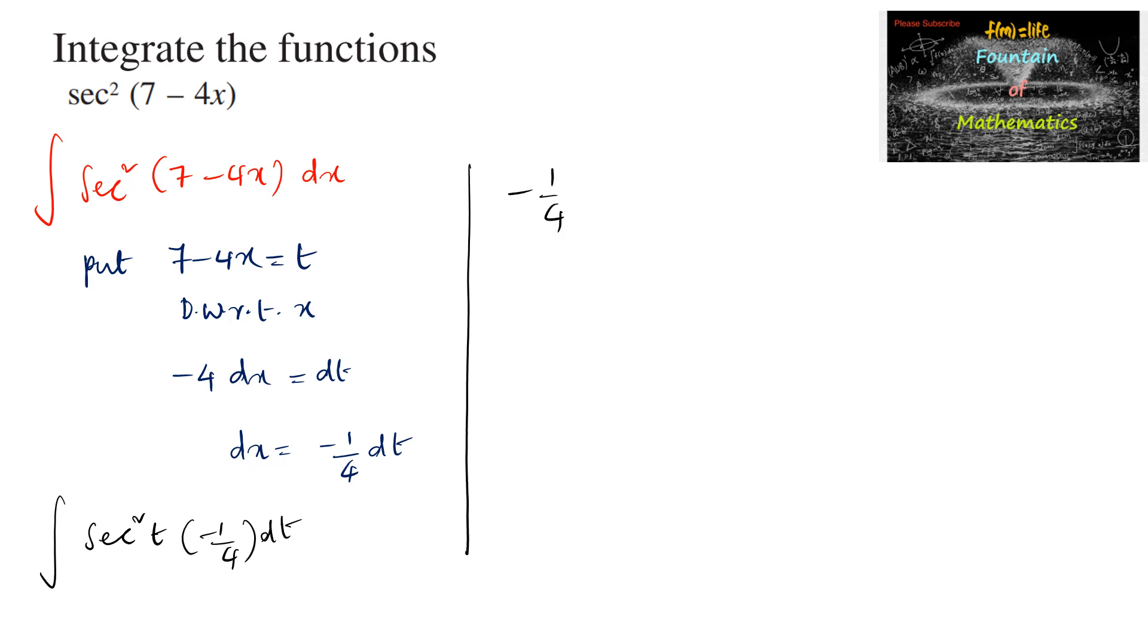So we can simplify here: minus 1 by 4 integral secant square t dt. That is minus 1 by 4, and the integral of secant square is tan t.